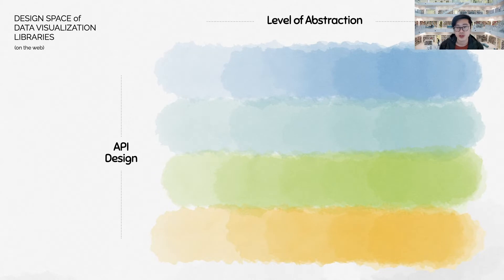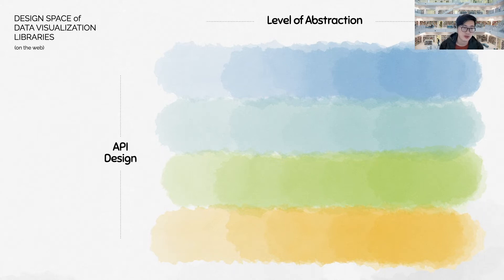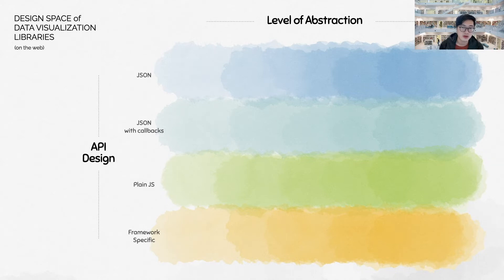I propose this design space with two dimensions. One is the API design, which means how the library's authors decided the code should be written. Another one, which is more important, is the level of abstraction. Now let's go over the API design.